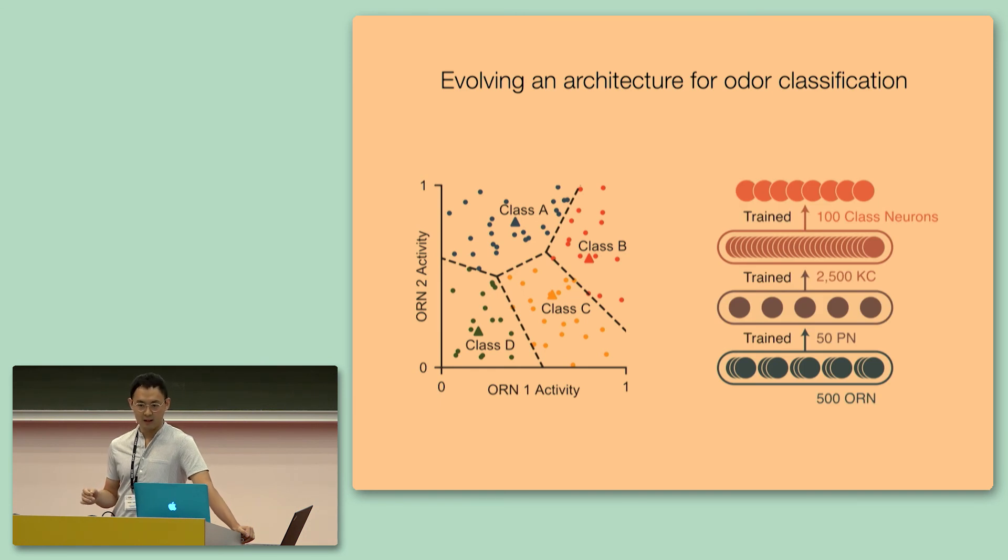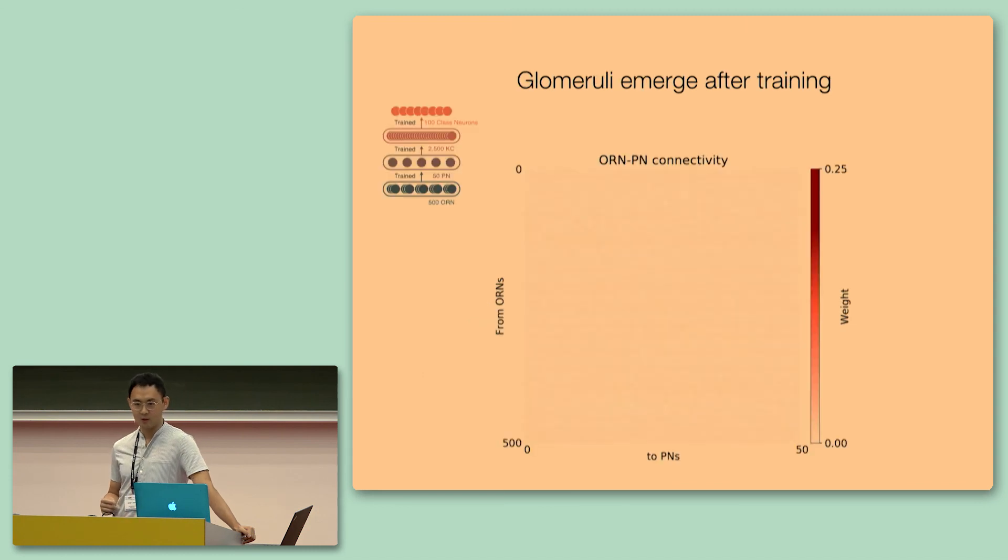Initially, we provide a fairly constrained network where we specify the number of neurons per layer and also the number of layers to be the same as the fruit fly olfactory system. However, all the connectivity between every single layer are initially initialized to be dense and random. And we ask what connectivity evolves in this network to support classification performance. So, right now I'm going to show you the connectivity from the first layer, from the 500 ORNs on the y-axis to 50 PNs on the x-axis, as a function of training.